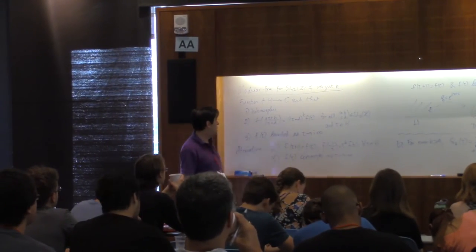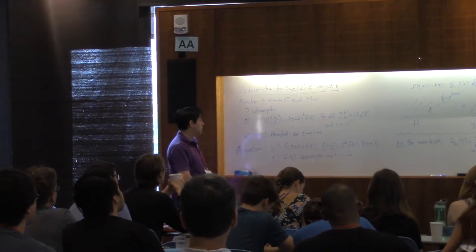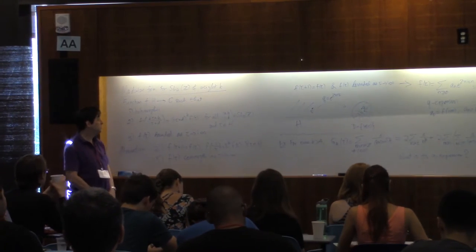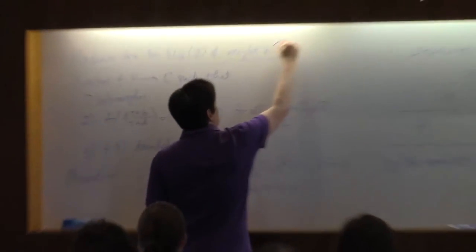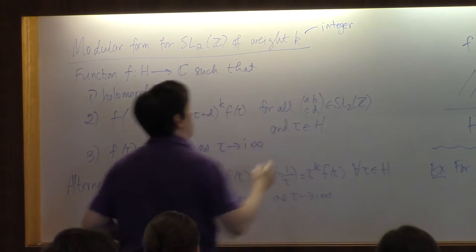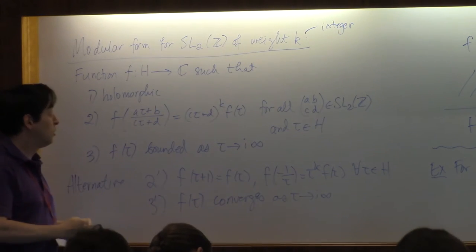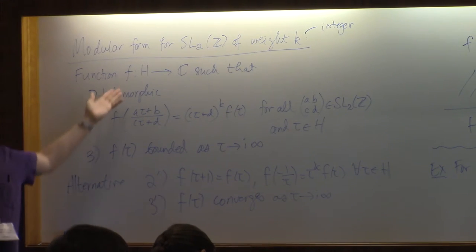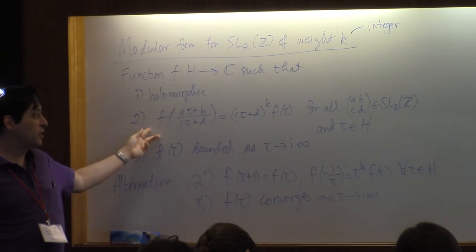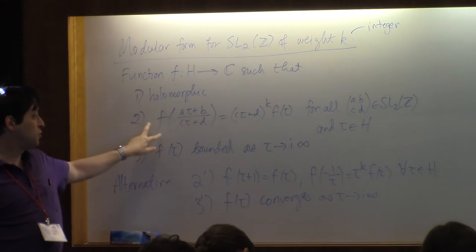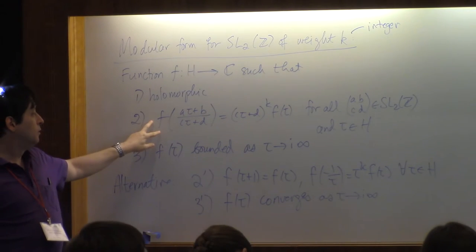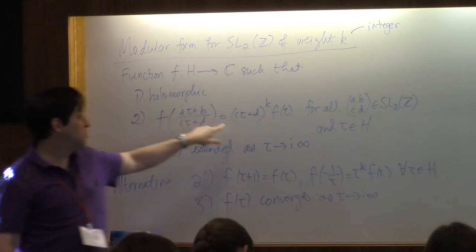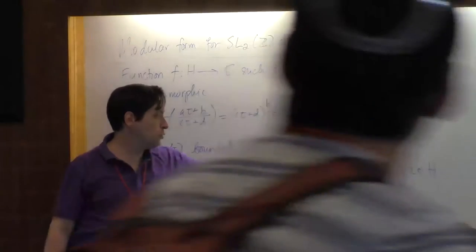Okay, so I put up here ahead of time a review of what the definition of a modular form is. We have to pick an integer k, and for each integer we have a notion of a modular form for the group SL2Z of weight k, a holomorphic function on the upper half plane, satisfies this transformation rule for all matrices in SL2Z. But this rule, it suffices to check on generators for the group, so this infinite set of equations is the same as these two equations.